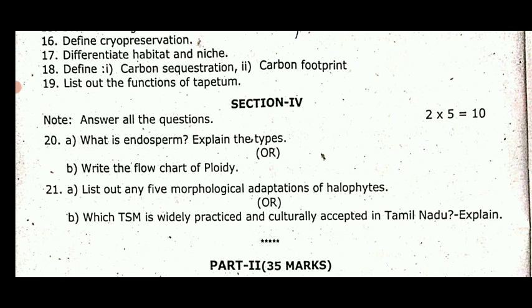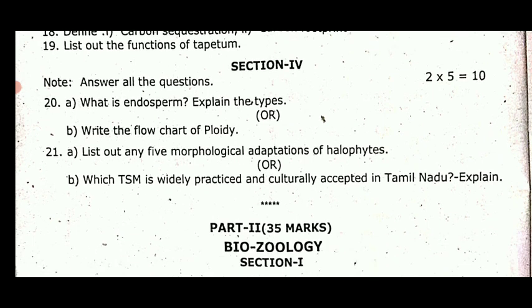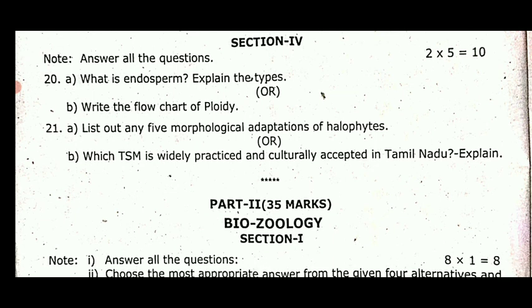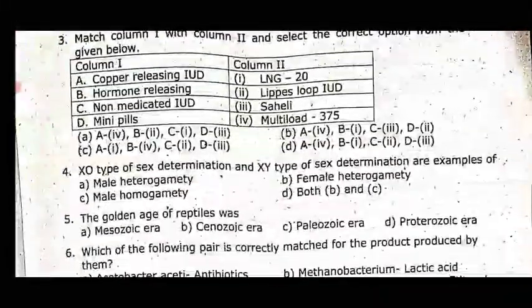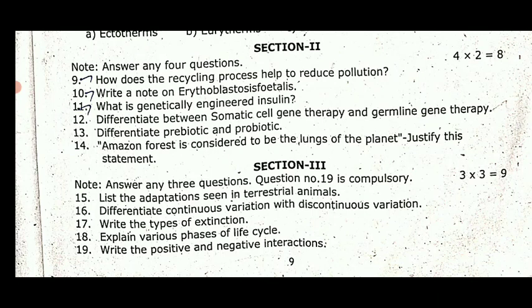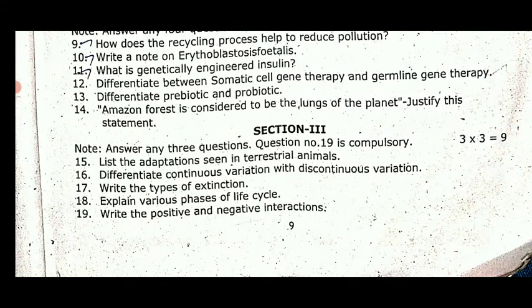Five-mark questions from model question paper 2: what is endosperm and explain its types; write the flowchart of ploidy; list out any morphological adaptations of halophytes; which traditional system of medicine is widely practiced and culturally accepted in Tamil Nadu — explain. From biozoology model paper 2: how does the recycling process help reduce pollution; write a note on genetically engineered insulin; difference between somatic cell gene therapy and germline gene therapy; probiotics vs prebiotics; Amazon forest is considered the lungs of the planet — justify. List out the adaptations of terrestrial animals.